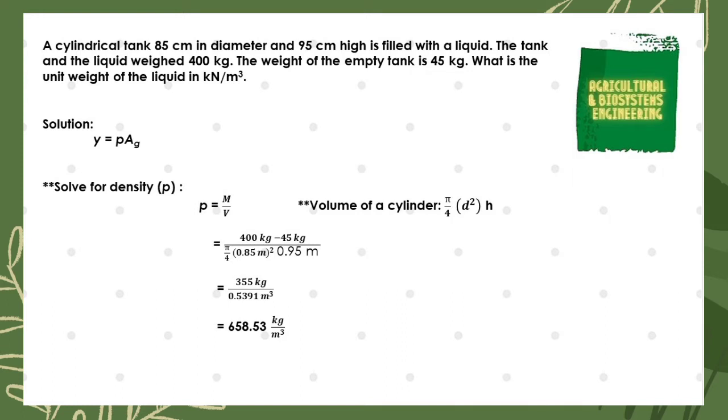The value for our mass must only be the mass of the liquid, so we subtract the mass of the liquid and tank and the mass of the empty tank. We also must convert our centimeter unit to meters. We have now 400 kg minus 45 kg divided by π/4 times diameter of 0.85 meters squared multiplied by the height of 0.95 meters.